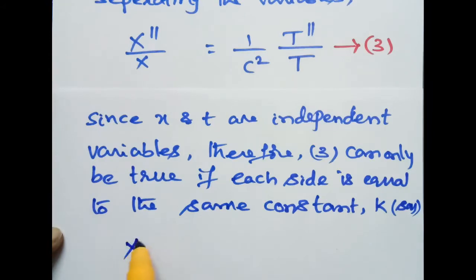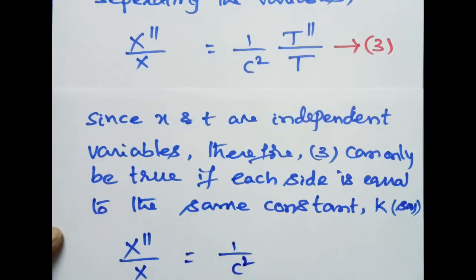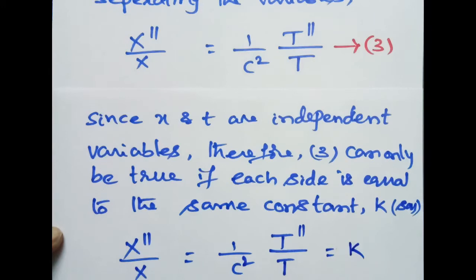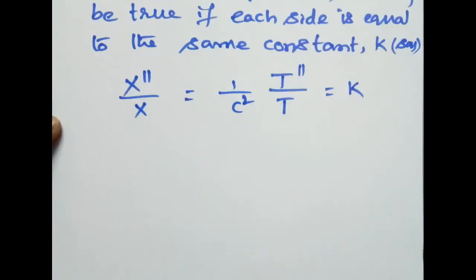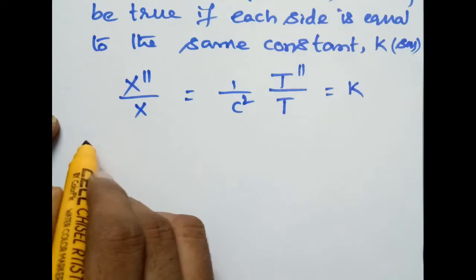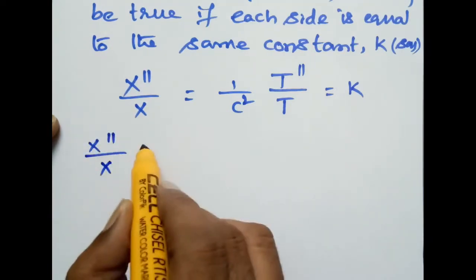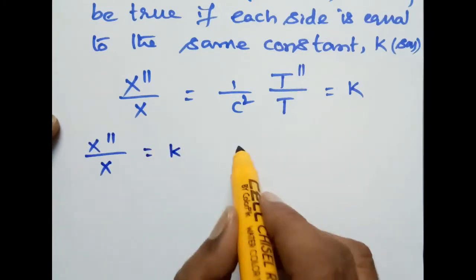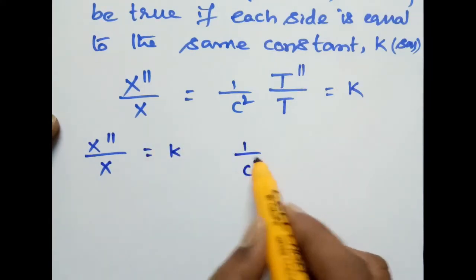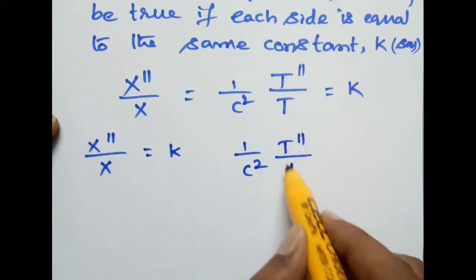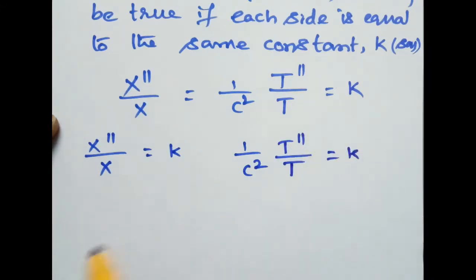Therefore, assuming X''/X = (1/c²) · T''/T = k. This can be written as two separate equations: X''/X = k, and (1/c²) · T''/T = k.